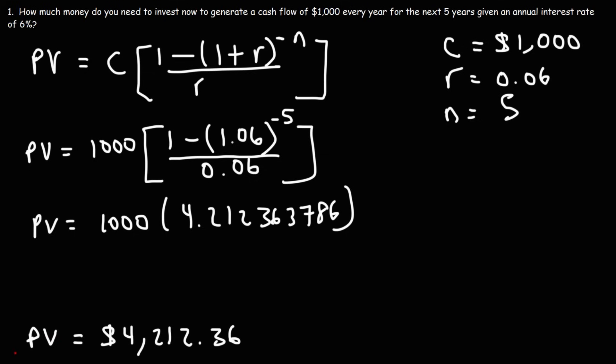The present value for this annuity is $4,212.36. That's how much money we need to invest now to generate a cash flow of $1,000 every year for the next five years. So we're putting about $4,200 in and we're going to get over $5,000 over the next five years.